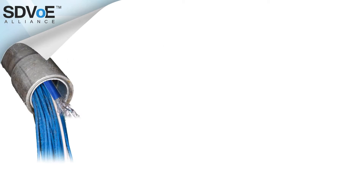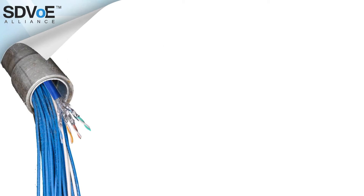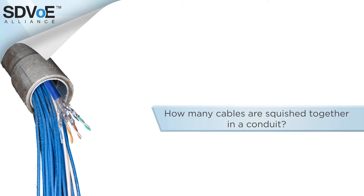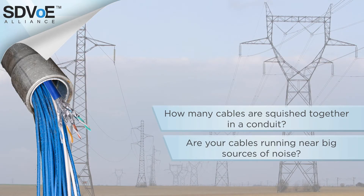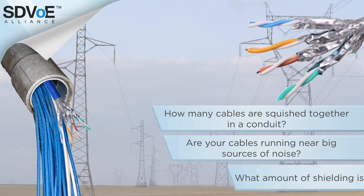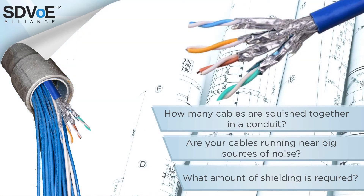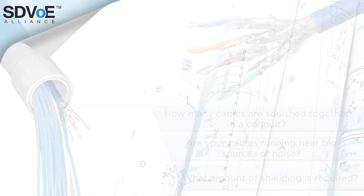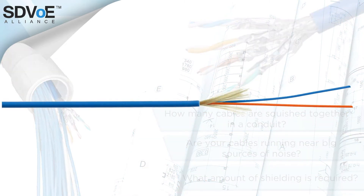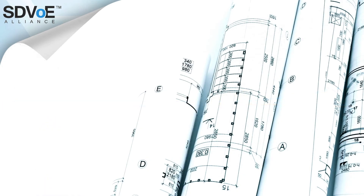When dealing with copper cable there are a number of factors which need to be considered. For example, how many cables are squished together in a conduit? Are your cable paths running anywhere near large sources of electrical noise such as high voltage power lines? And if so, what amount of shielding is required on your cable as a result? These are just some of the things you need to consider when designing the perfect copper infrastructure. And because fiber is not susceptible to any of this interference, these factors need not play a part in your system design.